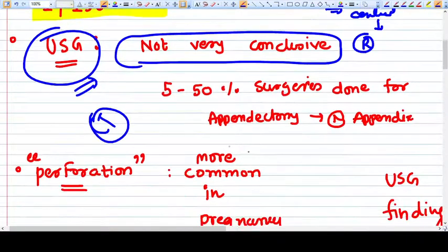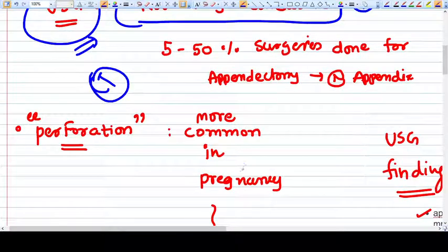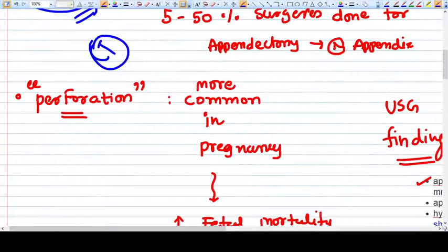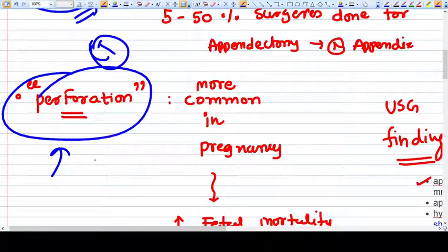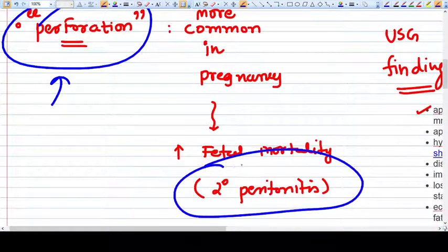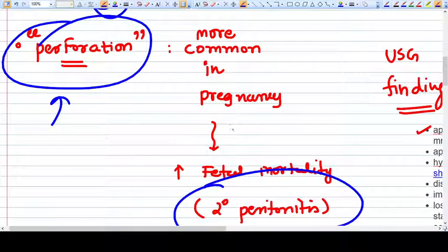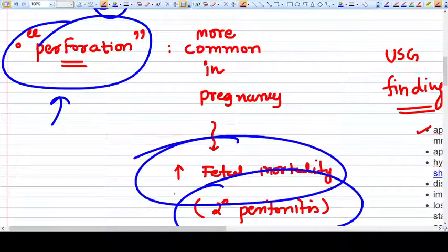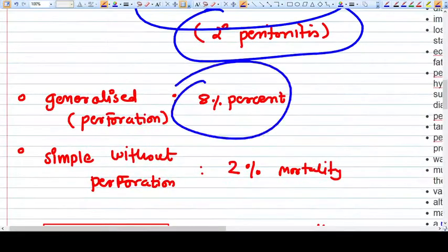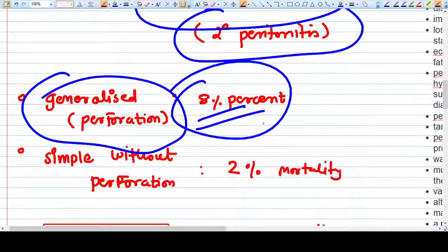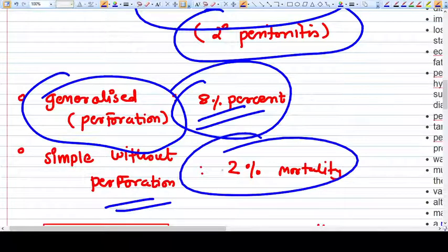The problem with appendicitis is perforation. If perforation happens, secondary peritonitis develops, leading to premature delivery and increased fetal mortality. Eight percent fetal mortality occurs in cases of acute appendicitis with perforation, but without perforation, only two percent mortality is there.